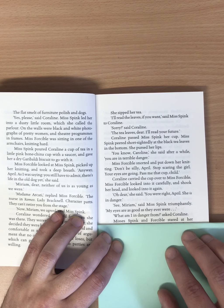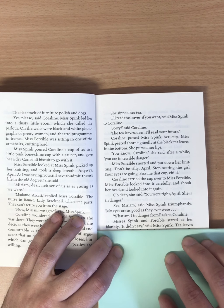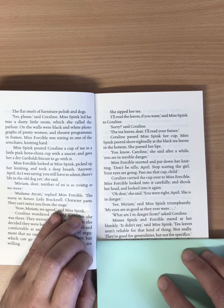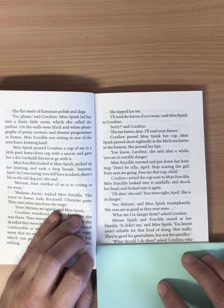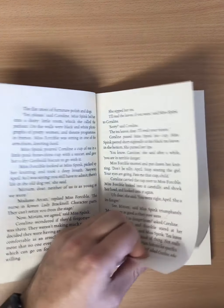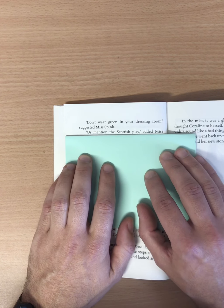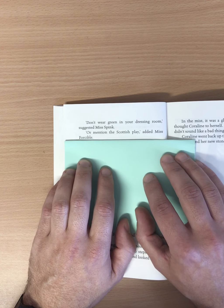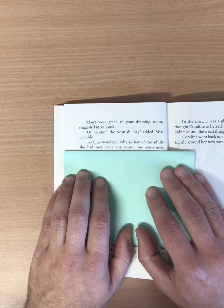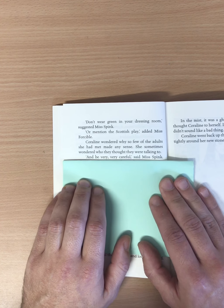What am I in danger from? asked Coraline. Miss Spink and Forcible stared at her blankly. It didn't say, said Miss Spink. Tea leaves aren't reliable for that kind of thing. Not really. They're good for generalities, but not for specifics. What should I do then? asked Coraline, who was slightly alarmed by this. Don't wear green in your dressing room, suggested Miss Spink. Or mention the Scottish play, added Miss Forcible. Coraline wondered why so few of the adults she had met made any sense. She sometimes wondered who they thought they were talking to. And be very, very careful, said Miss Spink.